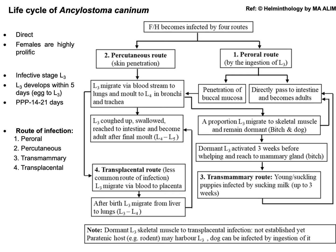The life cycle of Ancylostoma caninum is a direct life cycle, as there is no involvement of an intermediate host. The infective stage is L3, and there are four routes of infection: the first is the paroral route, the second is percutaneous, the third is transmammary, and the fourth is the transplacental route of infection. The transplacental route is the least common.